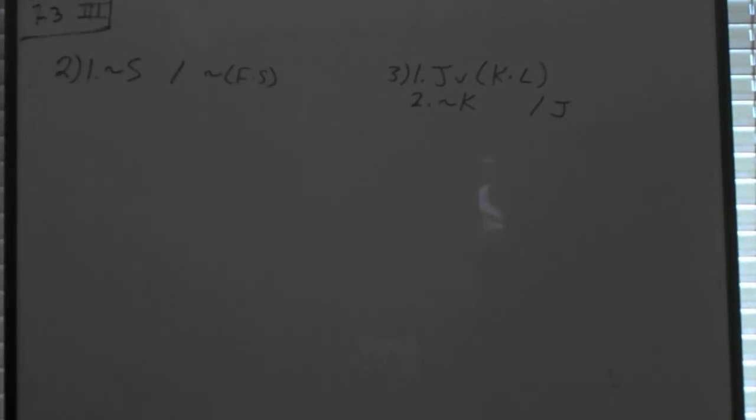All right, so we're going to check the homework now for section 7.3, and this is where we're working proofs using the eight rules that we learned originally as well as these five new rules of inference.